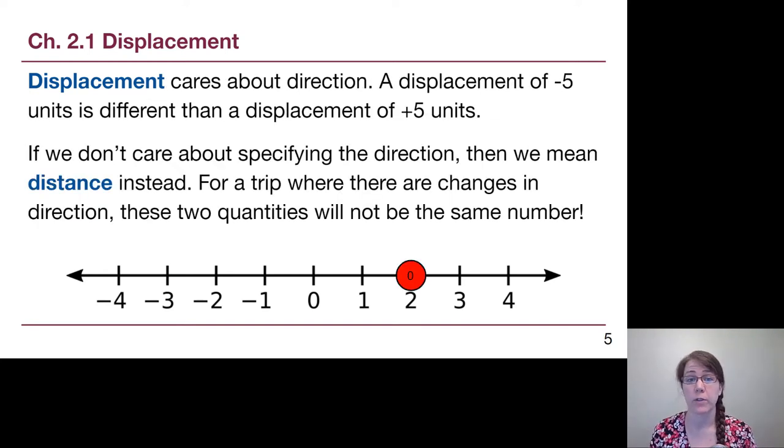A displacement of negative 5 units is different than a displacement of positive 5 units. That tells us we're starting to think about something that doesn't show up in everyday situations as much. If somebody asks if you've gone for a walk recently or a run, you tend not to clarify what direction you were going. You just tell them the amount that you ran or walked. If you have a Fitbit or any fitness tracker, it will just count the number of steps, not caring where you go, whether you're going north, east, left, right, forward, backwards.